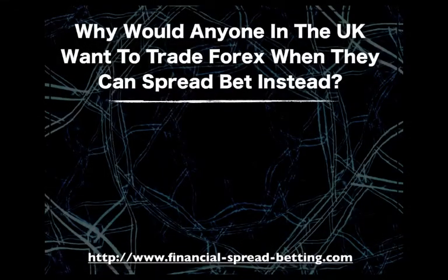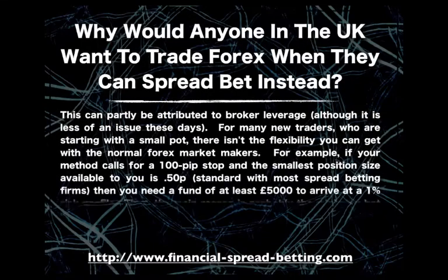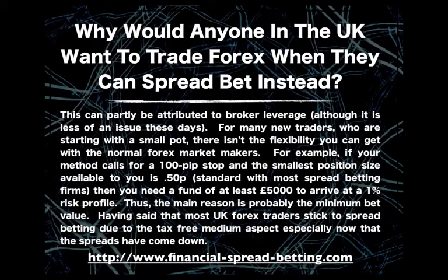Why would anyone in the UK want to trade Forex when they can spread bet instead? This can be partly attributed to broker leverage. For many new traders starting with a small pot, there isn't the flexibility you can get with the normal Forex market makers. For example, if your method calls for a 100 pip stop and the smallest position size available to you is 50 pence, then you need a fund of at least £5,000 to arrive at a 1% risk profile. Thus, the main reason is probably the minimum bet value.